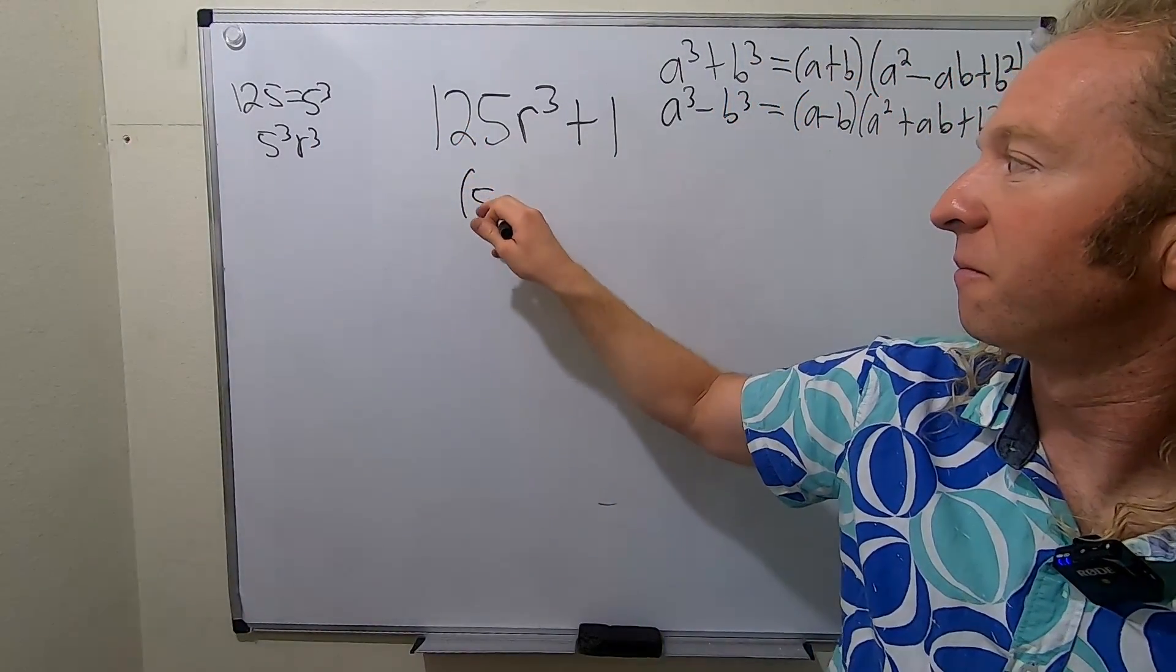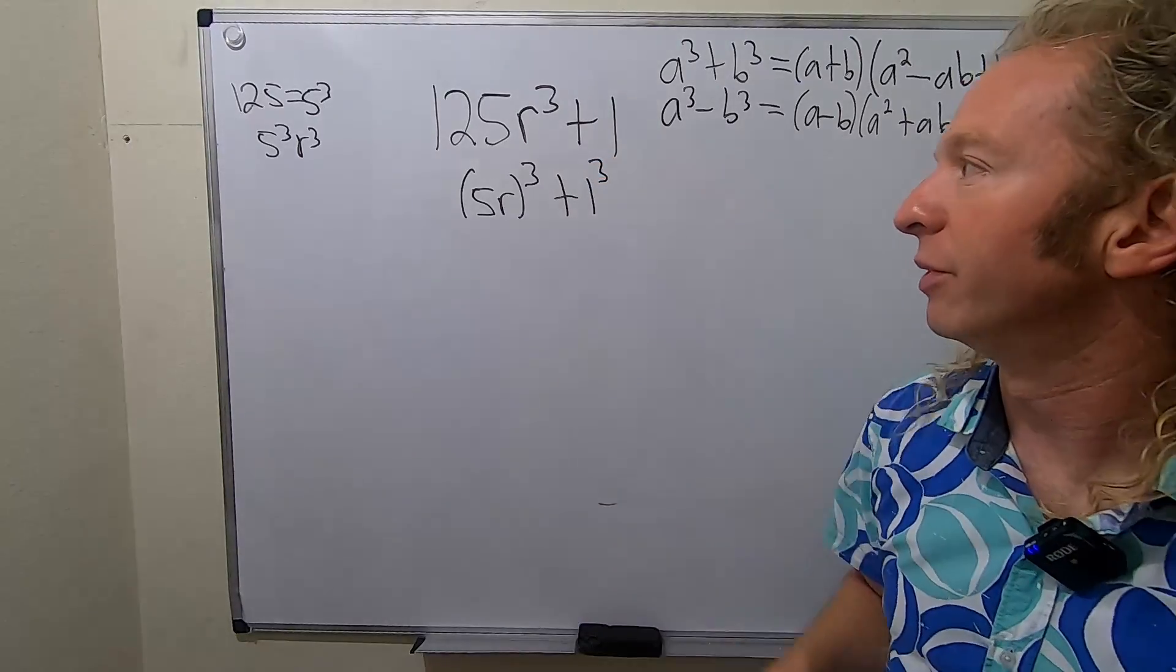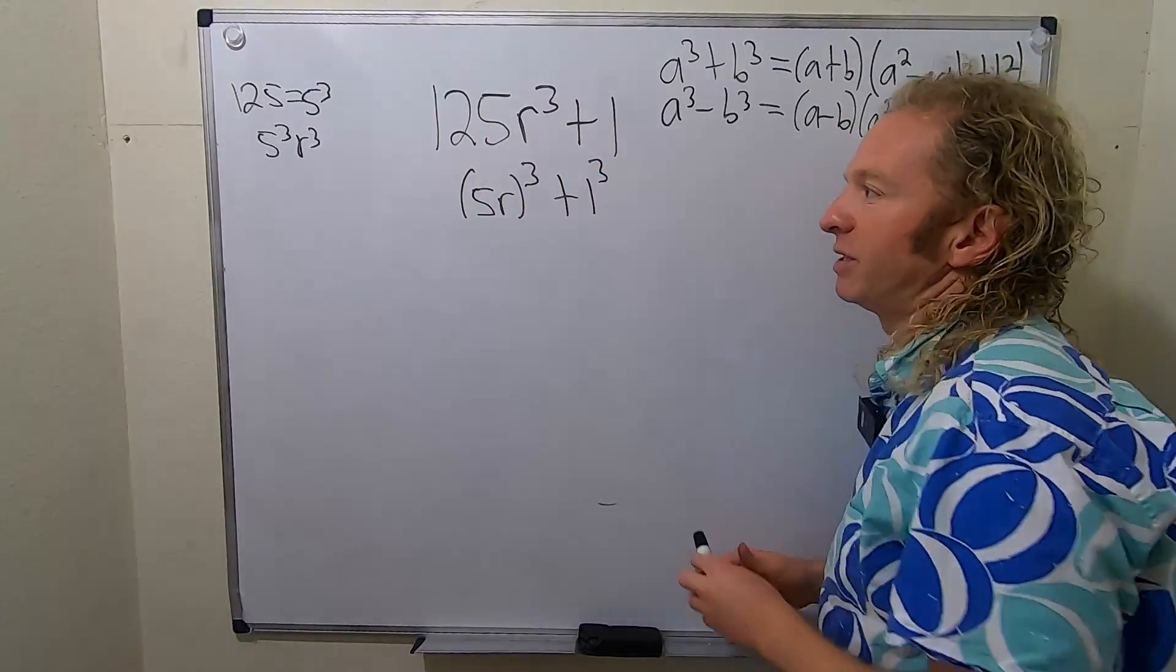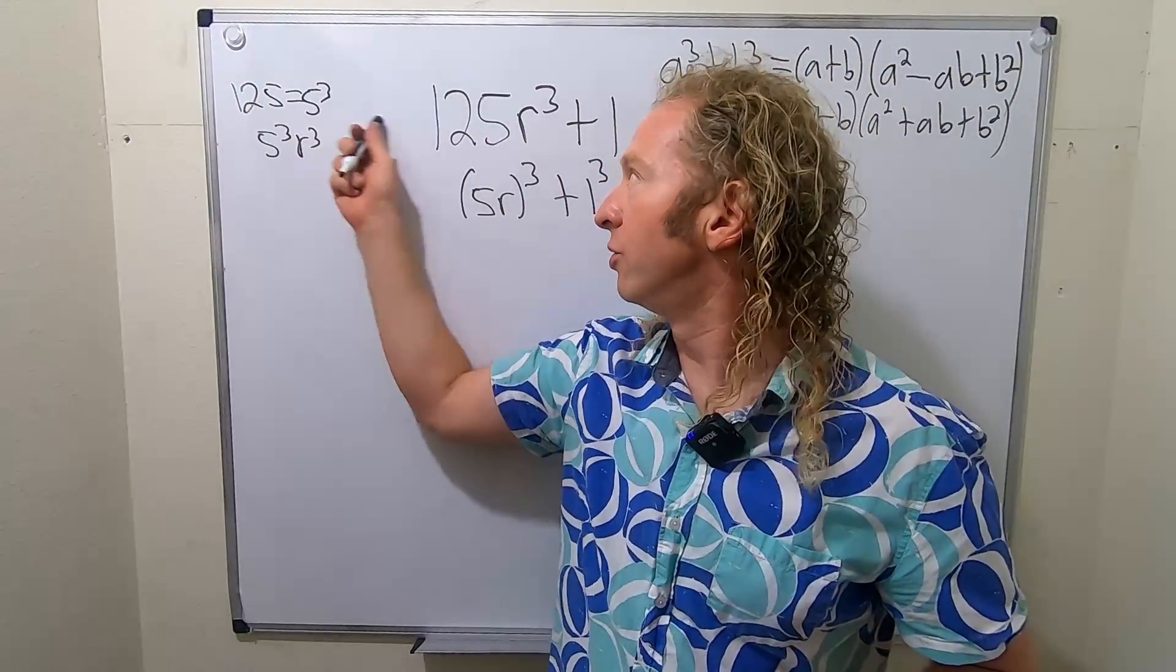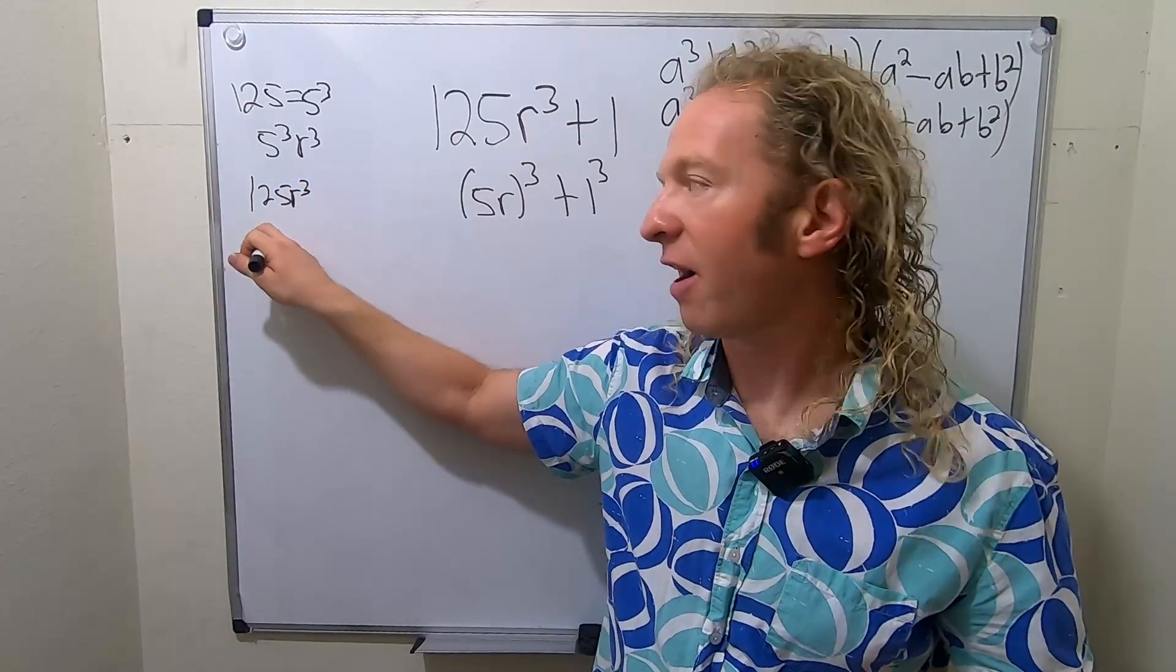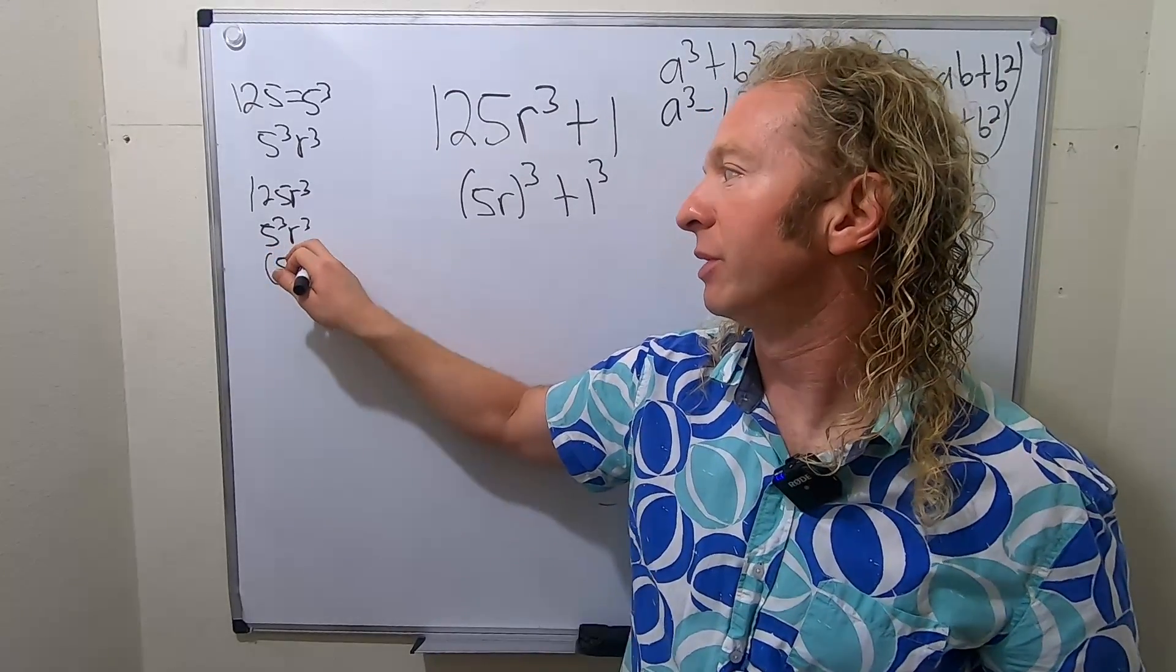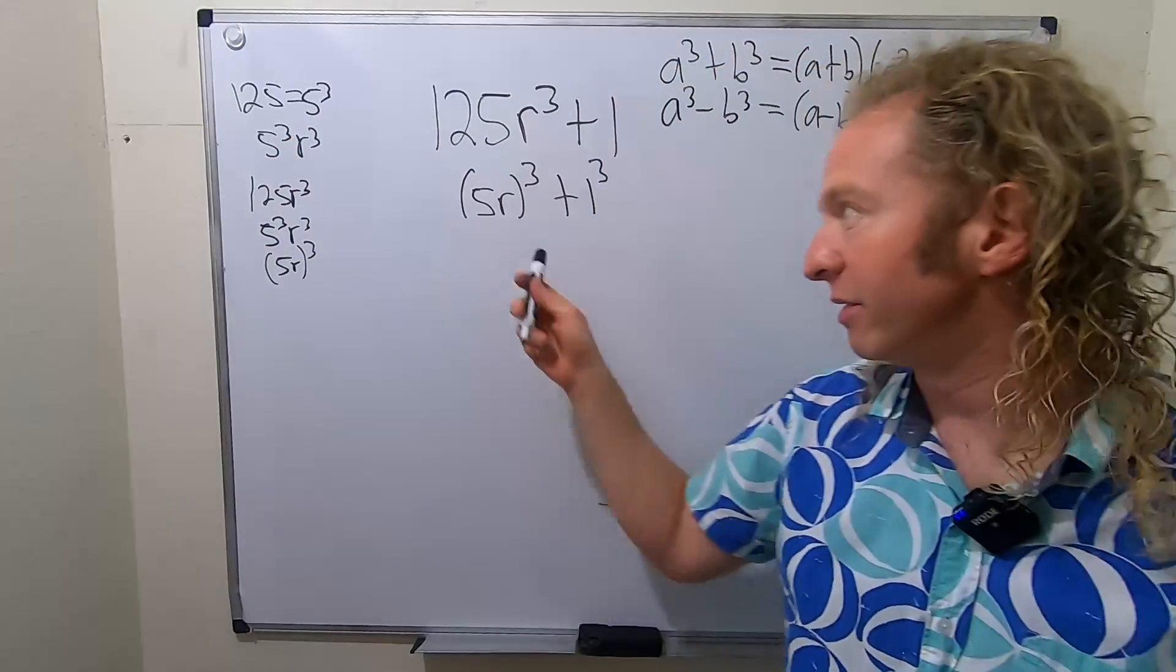So you can write this as (5R)³ + 1³, right? So you can just make this leap. I just did this to show you that you can do it in steps, right? You can write it as 125R³, and then write it as 5³R³, and then finally write it as (5R)³. That's how you would get to this step.